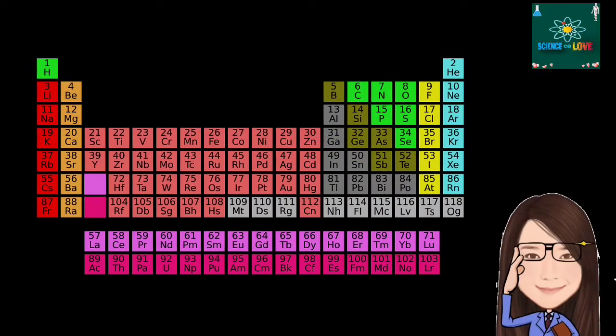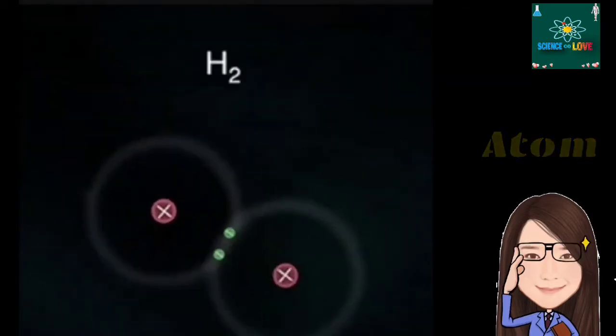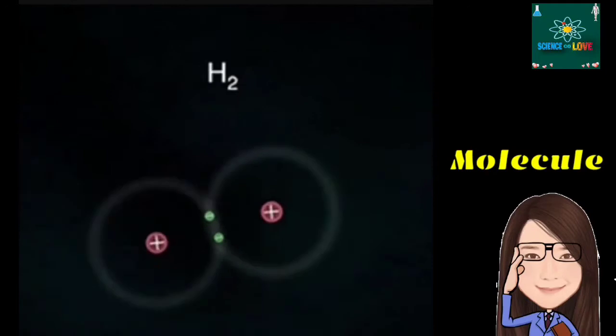Most elements in the periodic table exist as atoms. On the other hand, class, when atoms are combined, a molecule is formed.